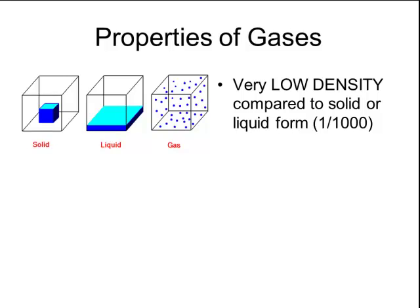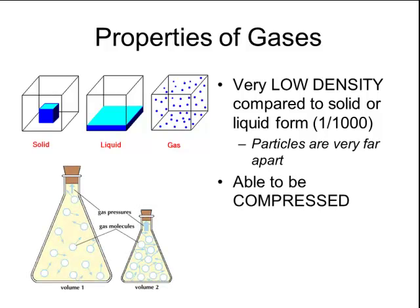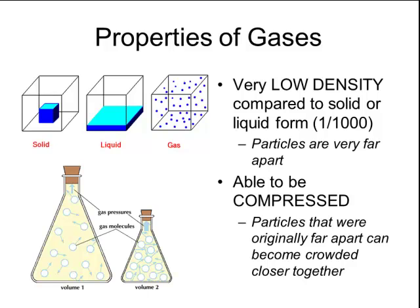Gases also have a very low density compared to their solid or liquid form — in fact, the density of a gas is usually one one-thousandth that of its solid or liquid form. The reason is that the particles are very, very far apart, causing the mass to be relatively small compared to its large volume. Gases are also able to be compressed. When you compress a gas, you're taking particles that were originally very far apart and pushing them closer together. This is really only possible with a gas because there's such a large distance between the particles in the first place — the particles of solids and liquids are much closer together and cannot easily be compressed.